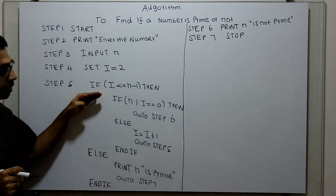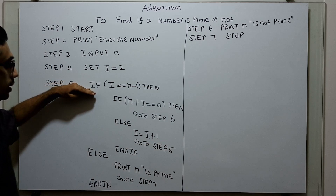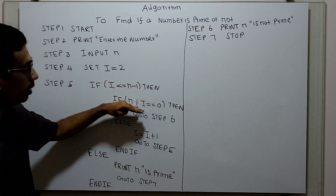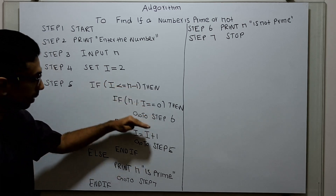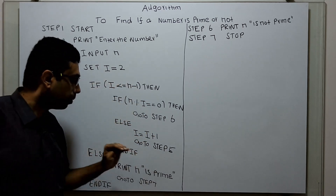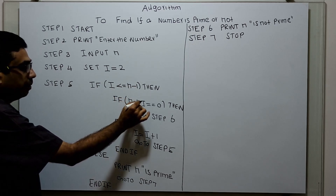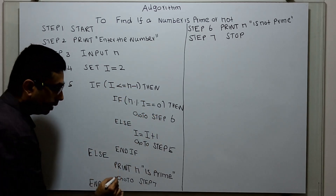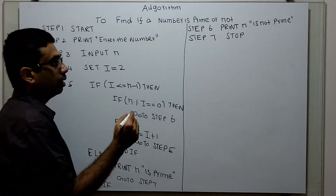Prime numbers are completely divided by themselves and 1 only. So I start i from 2 and move up to n minus 1. If n is divisible by any i value, it is not prime. Otherwise, I increment i by 1 and go to step 5. When i exceeds n minus 1, I come to the else part and print n is prime — because for all i from 2 to n minus 1, n was not completely divisible. Step 7 is the logical stop.